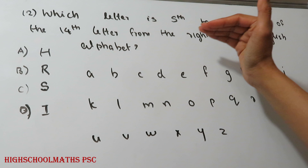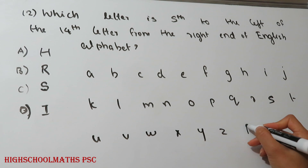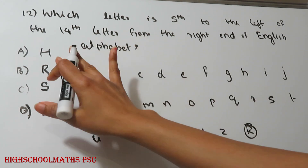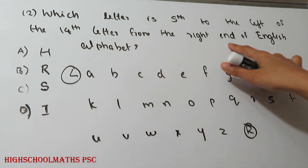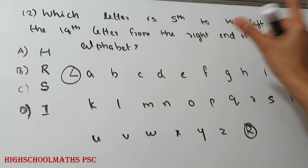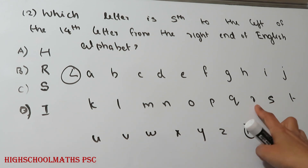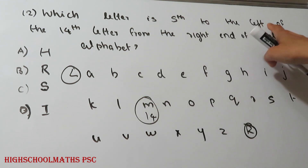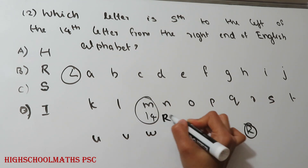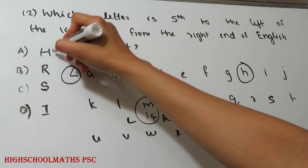Question: Which letter is 5 to the left of the 14th letter from the right of the English alphabet? First, find the 14th letter from the right. Counting from the right: 1, 2, 3, 4, 5, 6, 7, 8, 9, 10, 11, 12, 13, 14 — the 14th letter is M. Then move 5 places to the left of M: 1, 2, 3, 4, 5 — that gives H. Option A.